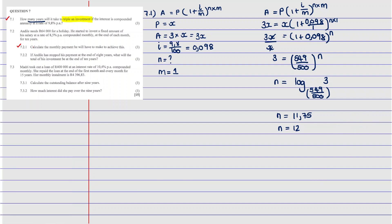Now we're going to move to 7.2. So 7.2.1 — it says: Anilio needs 64,000 for a holiday. He started to invest a fixed amount of his salary at a rate of 8.5%, compounded monthly, at the end of each month for 10 years. The first question asks: calculate the monthly installment that he would need to achieve this.